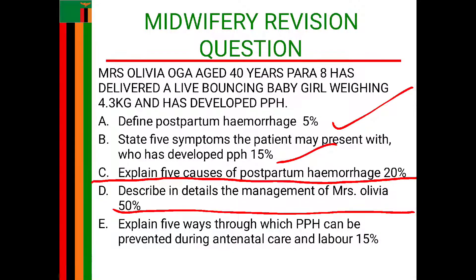The next heading is nutrition. I will give the patient a mixed diet rich in proteins such as kapenta to promote quick healing. I will give foods rich in carbohydrates such as nshima to promote energy, helping prevent fatigue and weakness. I will give foods rich in vitamins to boost the immune system, provide attractive meals to promote food intake and increase appetite, and give oral fluids such as fruit juices to promote energy.